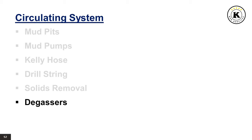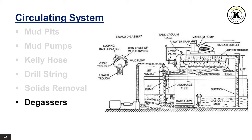The de-gassers separate gas trapped in the drilling fluid. The mud is either passed over a series of baffles or caused to swirl in a bowl, breaking it up to create the greatest surface area possible for gas release. Some de-gassers also apply a slight vacuum, aiding separation as gas or air bubbles expand and break out of the fluid more easily.